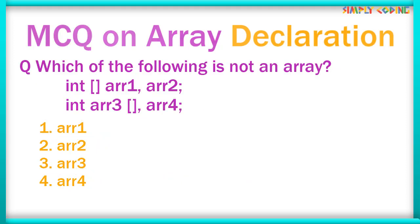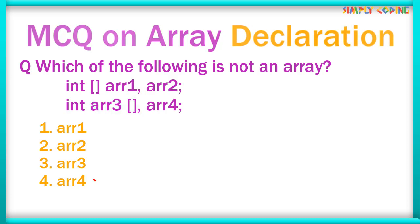In the next question, which of the following is not an array? If the square bracket is given along with the data type, it holds precedence and all variables declared after it with a comma will be declared as array data type. If the square bracket is given after the variable name, then only that variable is declared as an array and not the ones after it. So here, ARR4 is an int variable and not an array.